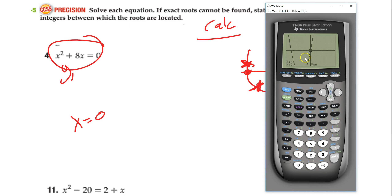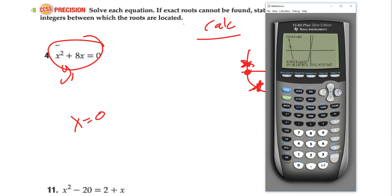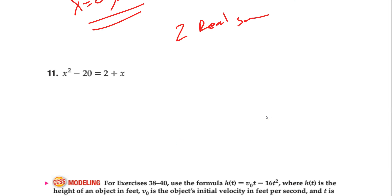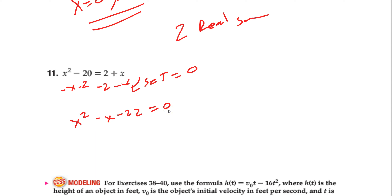So let me do it again for the other zero. Second → calculator → zero. I move all the way over to where the other zero should be, go a little left for the left bound, a little right for the right bound, and the calculator finds that zero — I get negative 8. So there are two real solutions. You can also graph it by setting it equal to 0: for example, rearranging gives x² - x - 22 = 0, and you find the x-intercepts the same way.